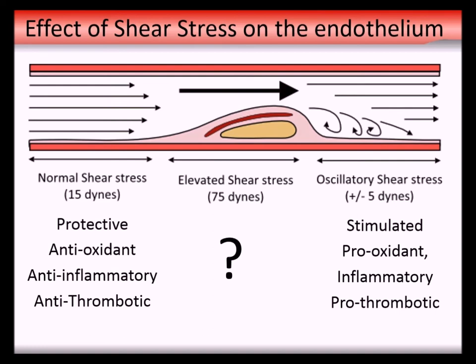Endothelial cells have different behavioral phenotypes depending on shear stress. Under normal shear stress they have a protective, antioxidant, anti-inflammatory phenotype. Under oscillatory shear they're activated and respond more to pro-inflammatory stimuli. Then there's elevated shear over the top of the plaque - that's really a black box, and no one knows how the cells behave there. But it's the cells in that region that erode, so they fall off where the plaque is stenotic. That's really what we set out to understand.